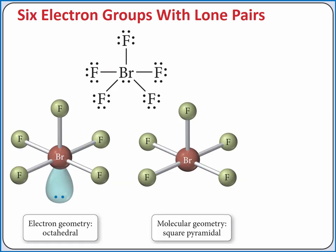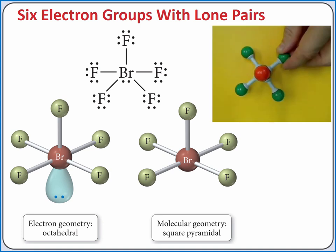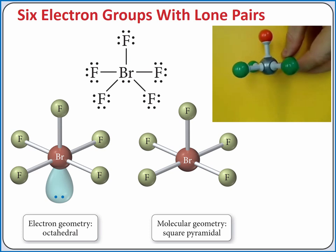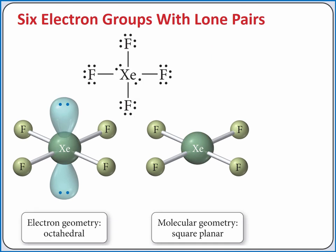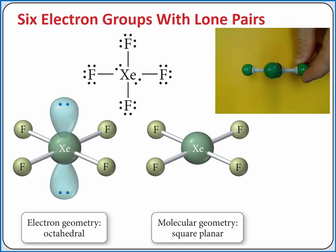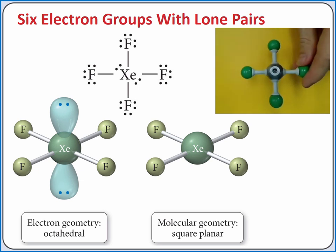If we have five bonding groups and one lone pair of electrons on the central atom, our molecular geometry is called square pyramidal. This is the case for bromine pentafluoride. And finally, if we have four bonding groups and two lone pairs of electrons on the central atom, our molecular geometry is called square planar. Xenon tetrafluoride has a square planar molecular geometry.